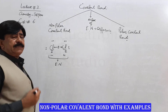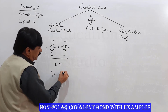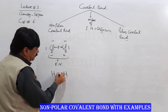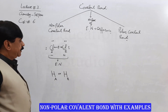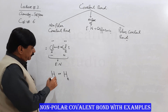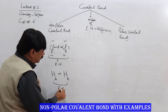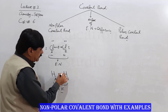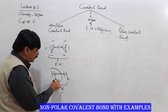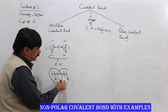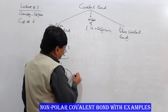Another example is hydrogen. Hydrogen has one electron in its valence shell. Hydrogen A and hydrogen B each share one electron with each other, and because there is no difference in electronegativity, the shared pair of electrons is equally distributed among these two atoms and the molecule remains electrically neutral.